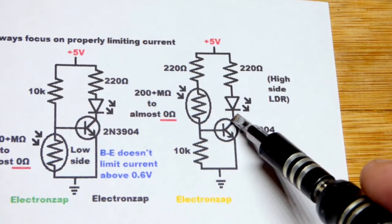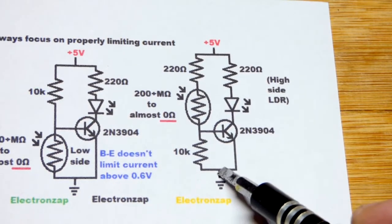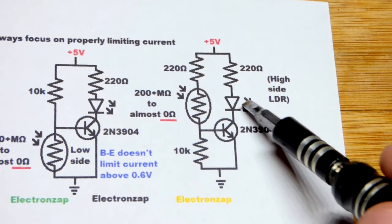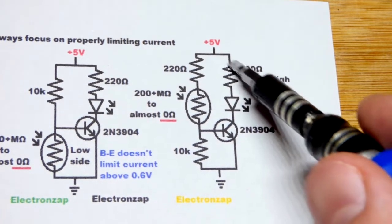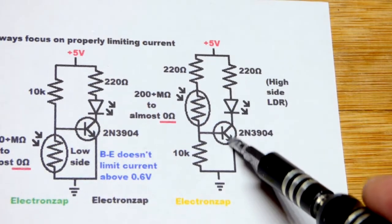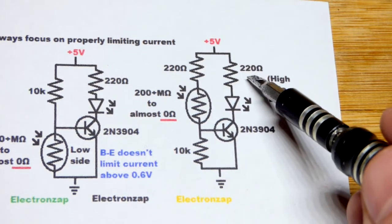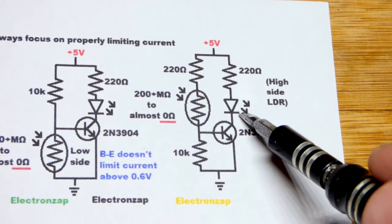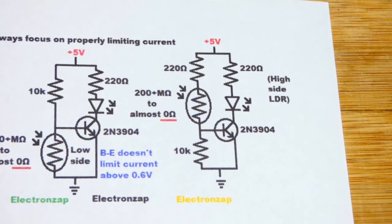That's another thing. You've got to make sure there's something in series with the collector-to-emitter, because it can conduct fully. But you put an LED and a resistor in series as a load. That limits the current to whatever the resistor and the LED set it to when the transistor is conducting fully.